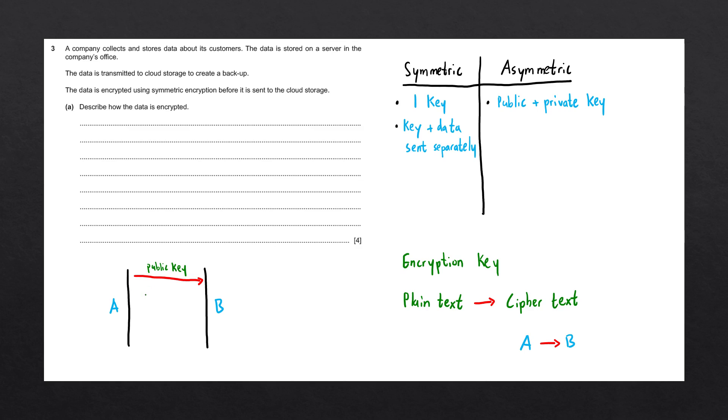The next thing that happens is computer A sends its public key over to computer B. Then computer B encrypts the message it wants to send to computer A using computer A's public key. It will then send the encrypted ciphertext back to computer A, and computer A will decrypt the text using its private key.